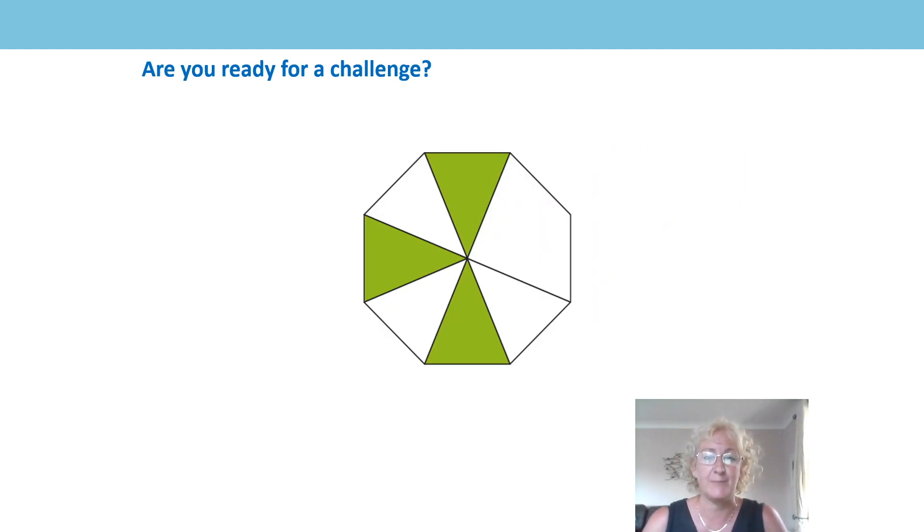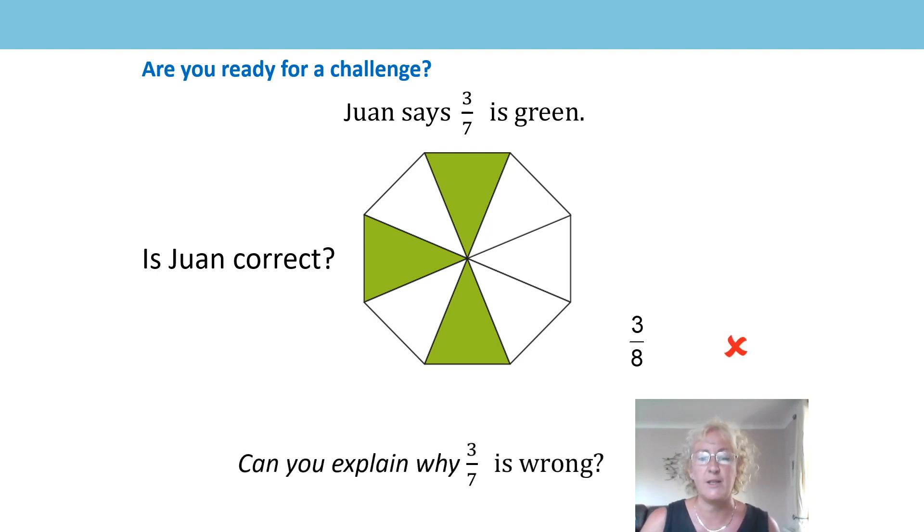Are you ready for a challenge? So here we've got our shape here, our diagram. And Juan says that three sevenths of this shape is green. Is he right? What do you think? Well, if we have a look at the diagram, what do you notice? Have we got equal parts? No, we haven't got equal parts. If we make the parts equal, we've got equal parts now. Altogether, we've got eight equal parts and three of them are shaded. So our fraction would be three eighths. So Juan isn't correct, is he? He's wrong. You might like to explain to a grown up why three sevenths is wrong.